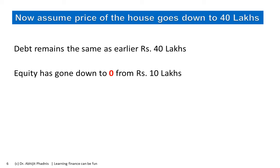On the other hand, let us assume that the price of the house goes down to 40 lakhs. What happens to debt? The debt owners will continue to have a claim of 40 lakhs on us. But the equity has suddenly got wiped out to zero from 10 lakhs. This is not a theoretical situation — it has actually happened in practical life. The entire subprime crisis in the US was about this wiping out of equity. In some cases, the equity even became negative.